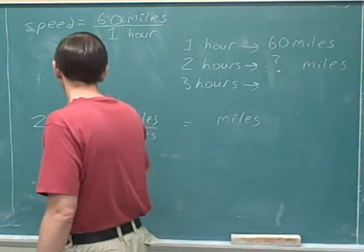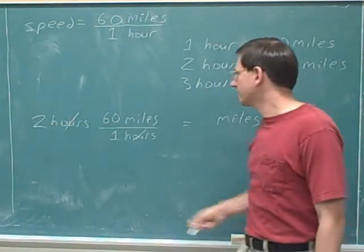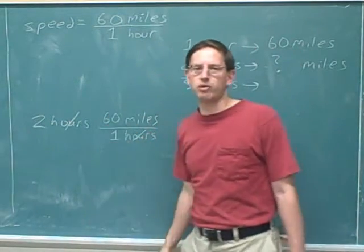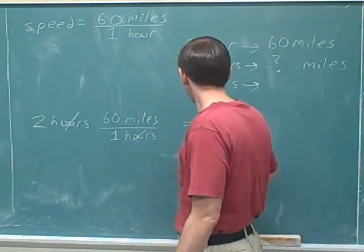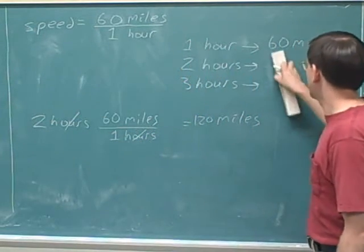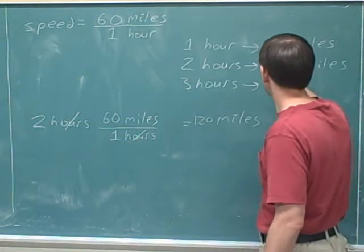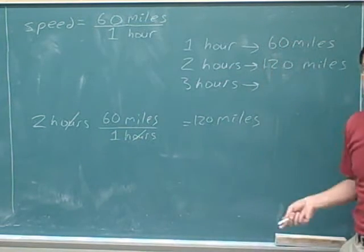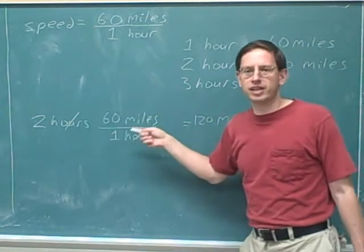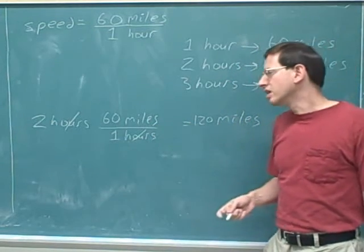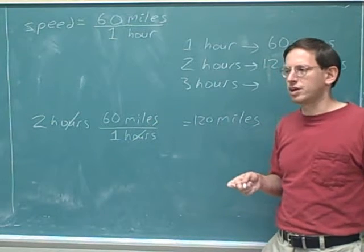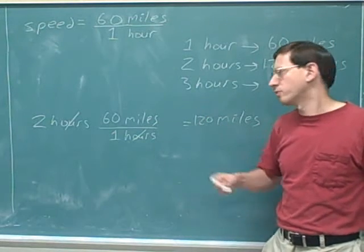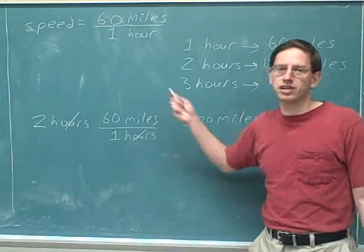Now the hours cancel, and we're left with the units we want, which is miles. And we have two times 60 divided by one. Well, we can ignore the one, so we just have two times 60, which is 120 miles. So in two hours, we're going to get 120 miles. Now, of course, this was so obvious you didn't need to write it down so meticulously like this. But again, the reason we're doing this is you need to have a systematic method for solving these problems when you're dealing with concepts that your intuition is not as strong for, or when you're dealing with more confusing numbers.